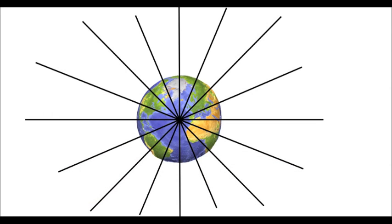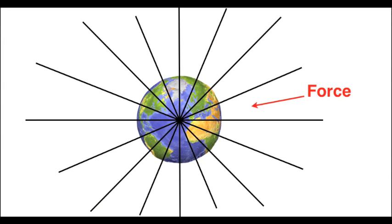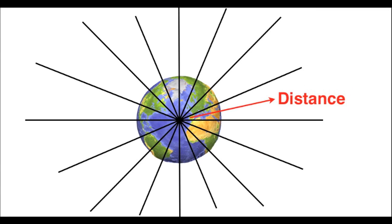The Earth's gravitational field spreads outwards from the centre of the Earth in all directions. As the field spreads outwards, the force directed towards the centre becomes smaller.